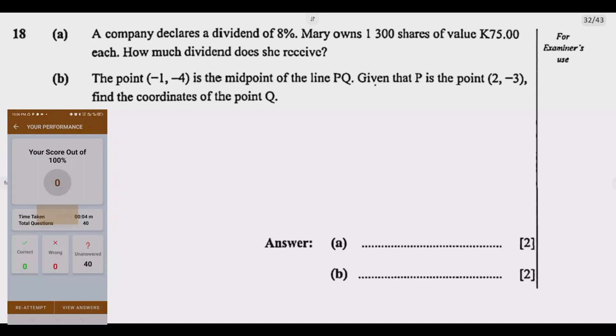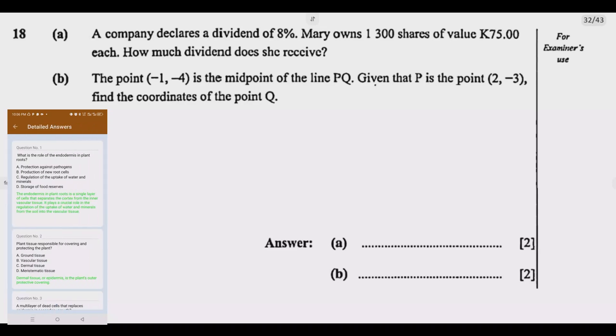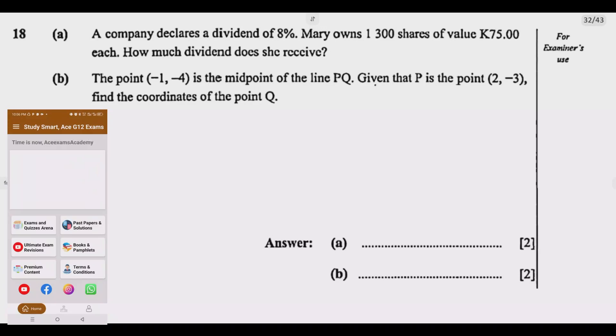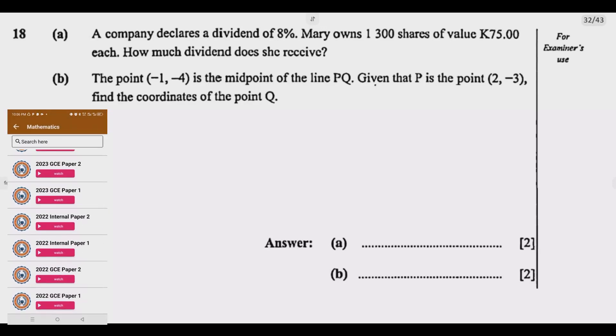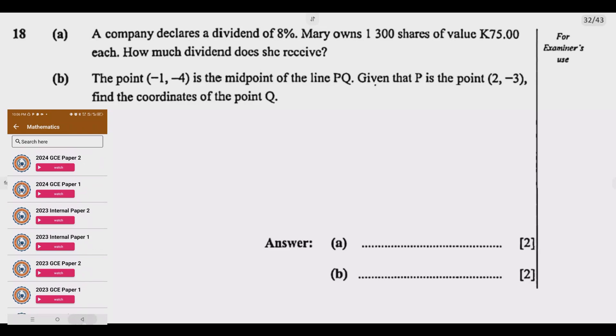Question B: The point (-1, -4) is the midpoint of the line PQ. Given that P is the point (2, -3), find the coordinates of the point Q. That's two marks each.